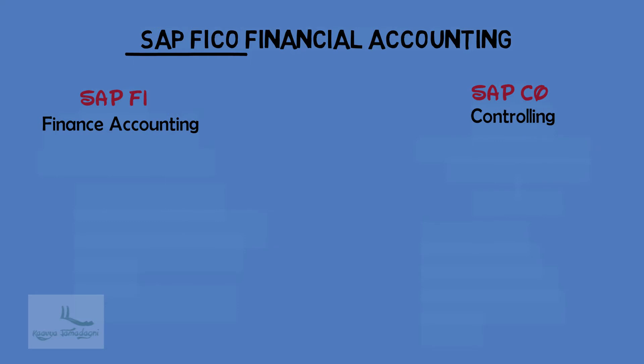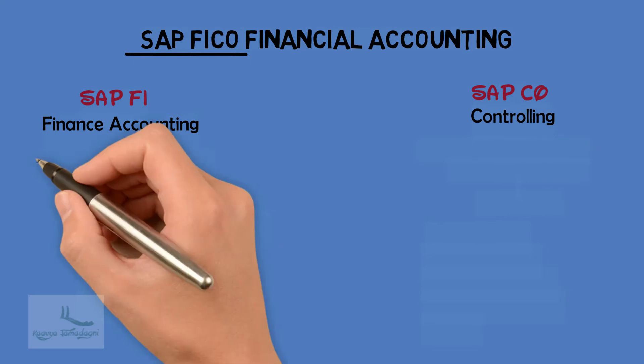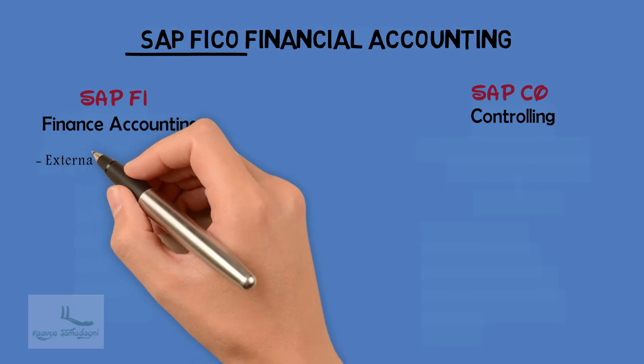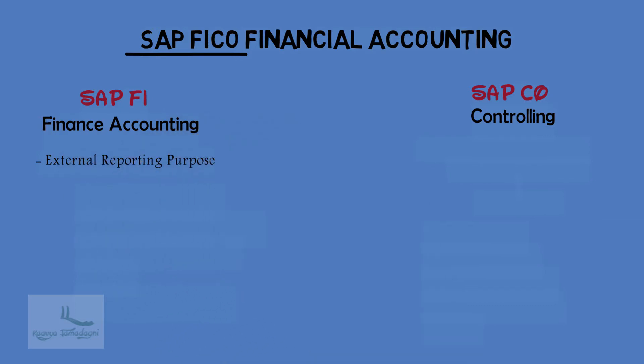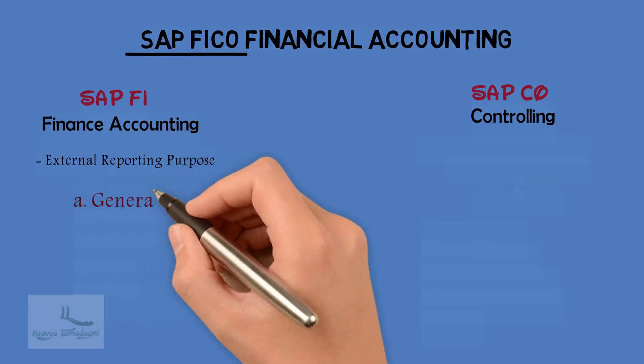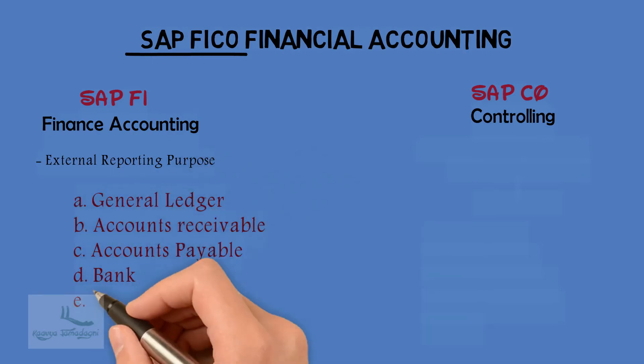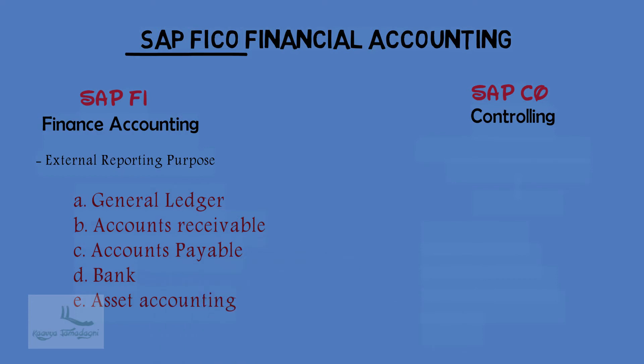SAP Financial Accounting module is used mainly for external reporting purposes — that means the profit and loss account and the balance sheet. This financial accounting module has five sub-modules: General Ledger, Accounts Receivable, Accounts Payable,